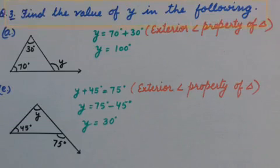Question number 3. Find the value of Y in the following. A part. One figure is given. If we focus on the figure, Y is the exterior angle. If we hide its interior adjacent angle, the remaining angles are opposite angles, and we know the exterior angle property of triangle says the exterior angle is equal to the sum of its two interior opposite angles. So, Y equals 100 degrees.